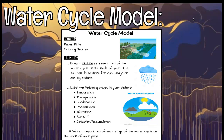So this water cycle paper plate — all you're pretty much doing is making a visual representation of the water cycle on the inside of your paper plate. You can do this one of two ways. You can section off the inside of the paper plate like little triangles for each section of the water cycle and draw a little representation and label the stage, or you can draw one big picture and label the different stages within it. The stages I want you to cover are evaporation, transpiration, condensation, precipitation, infiltration, runoff, and accumulation or collection — those seven. When you're done drawing the visuals, you'll flip your paper plate over and tell me a description of what happens in each of those stages.